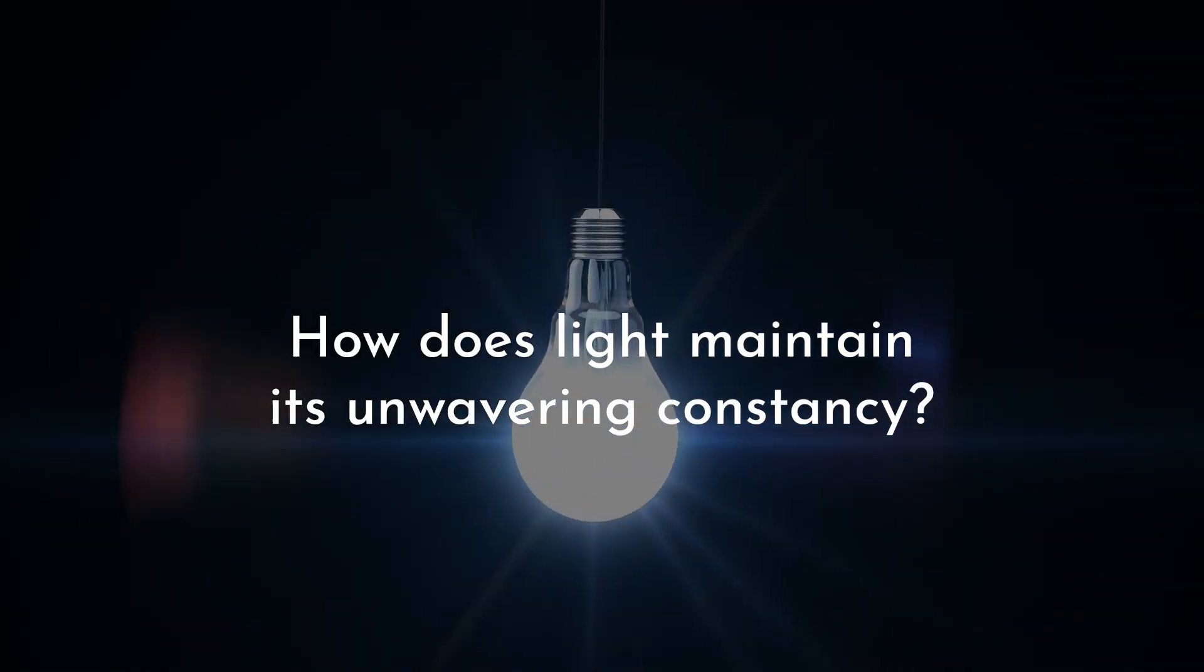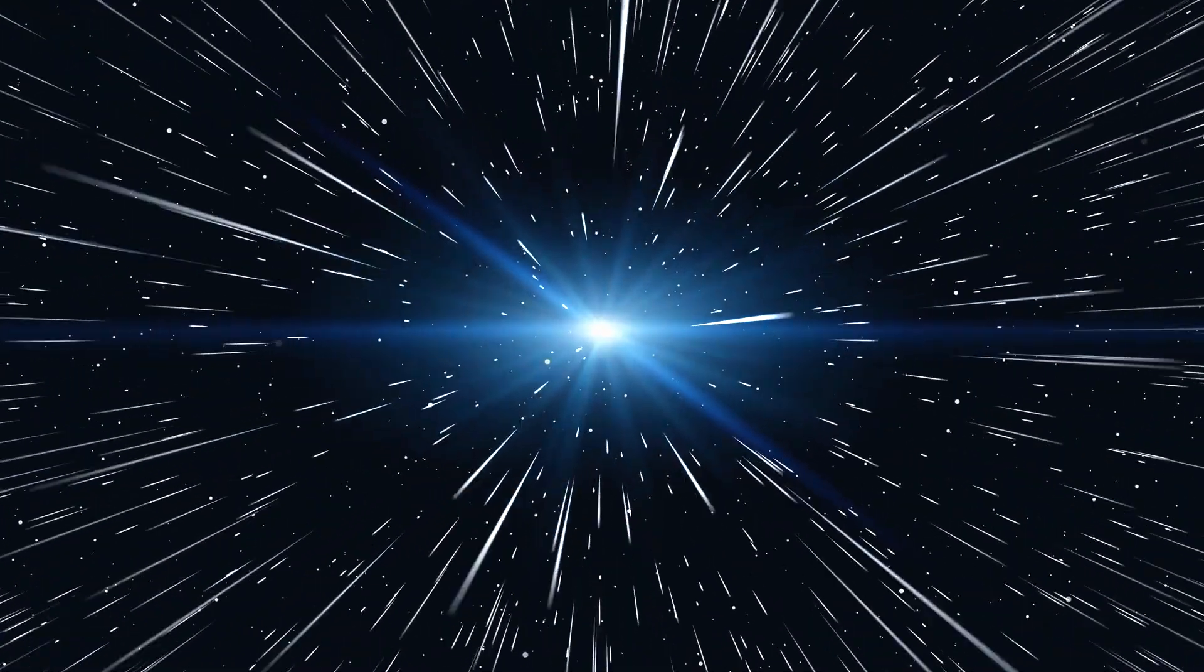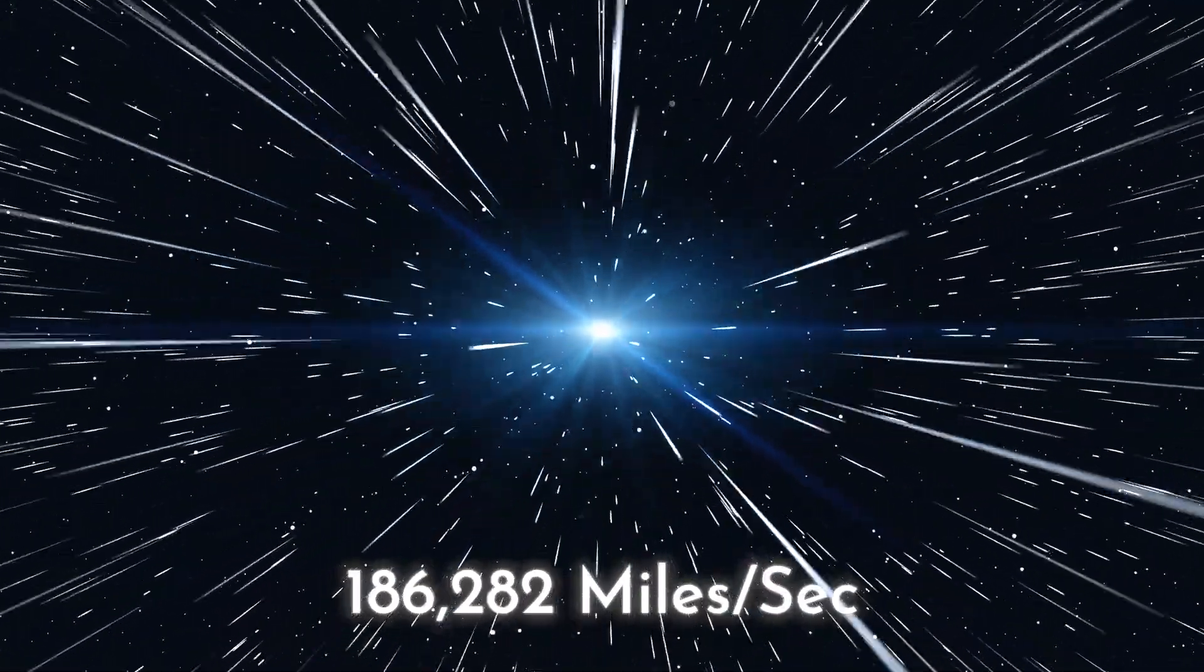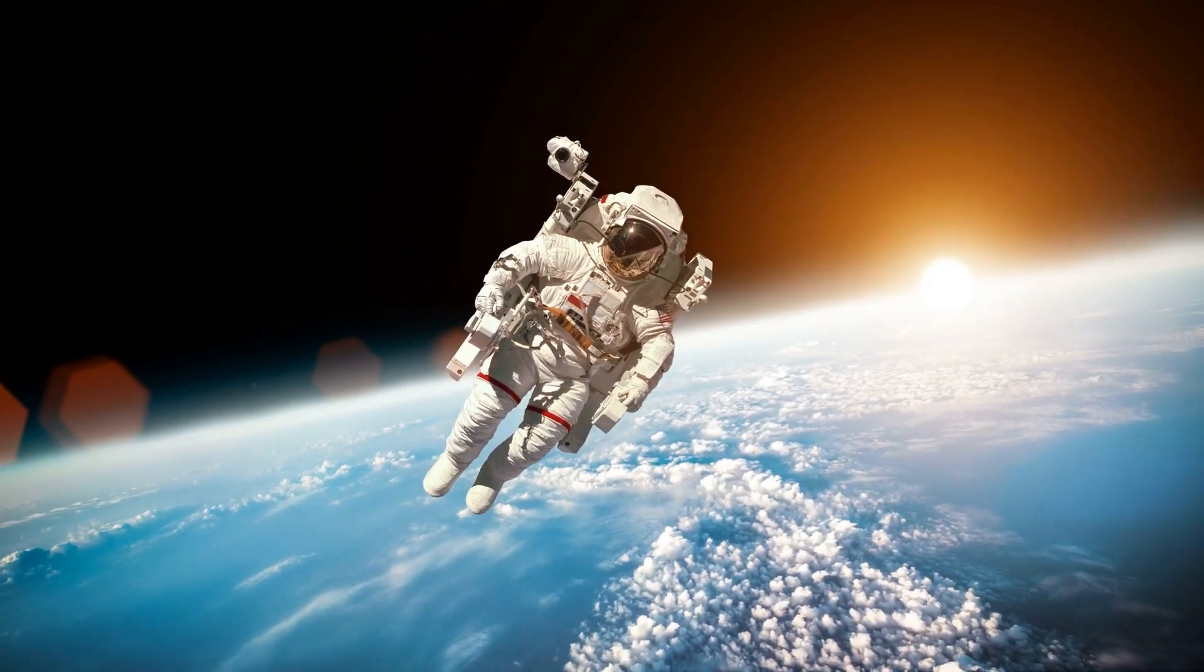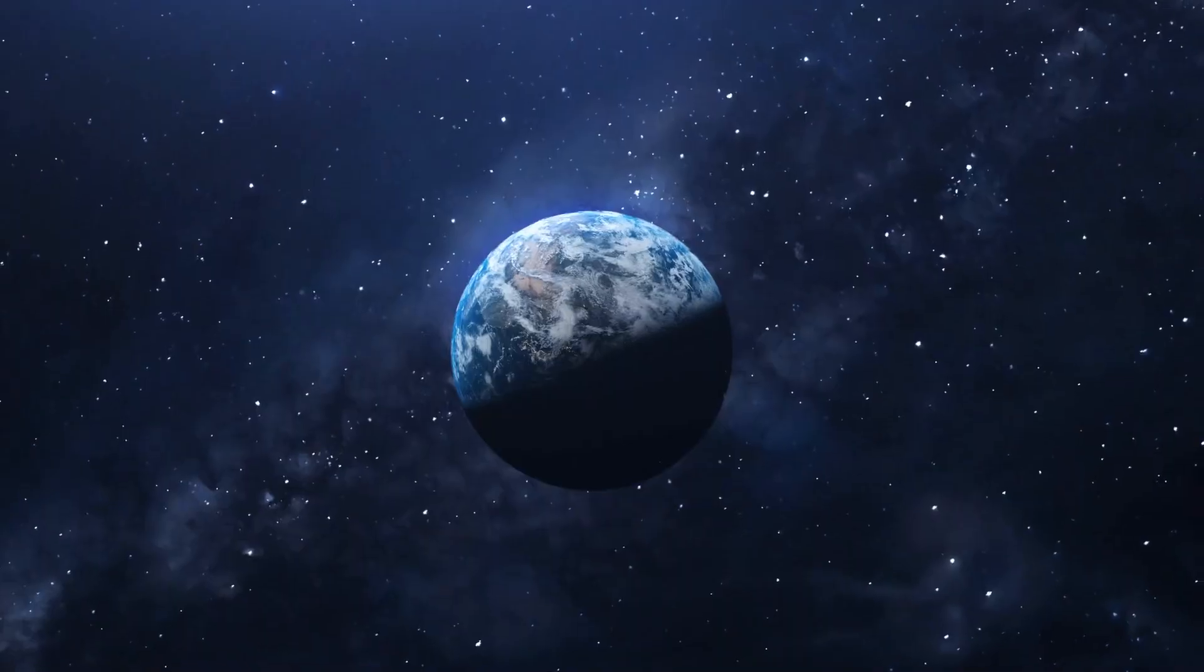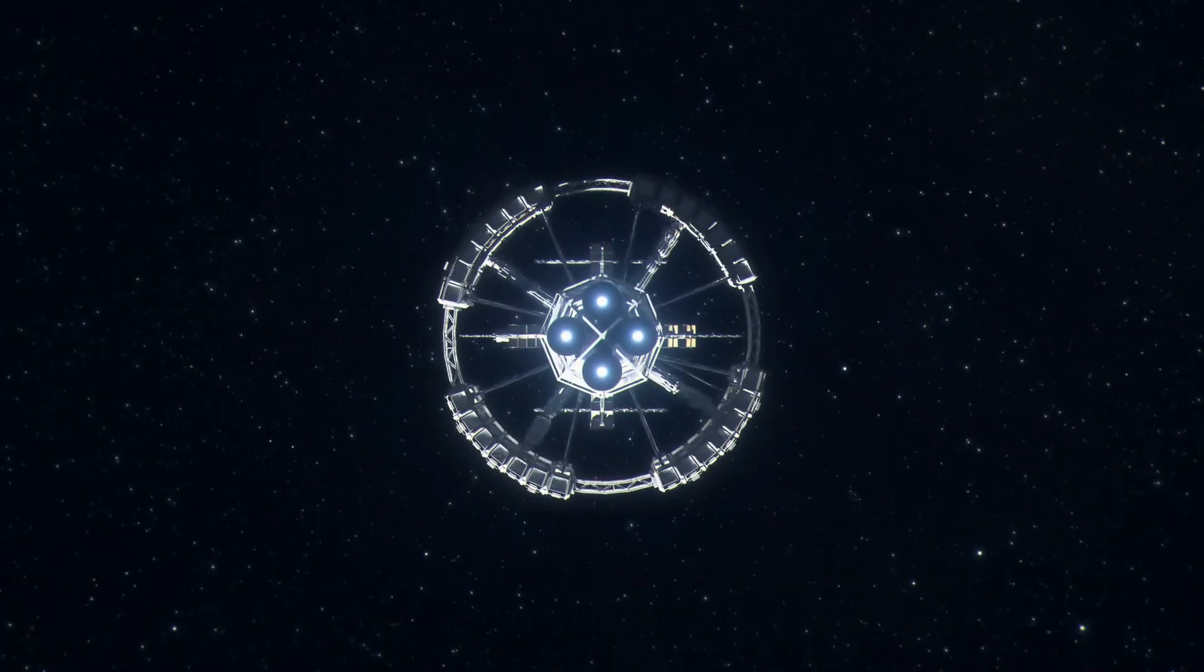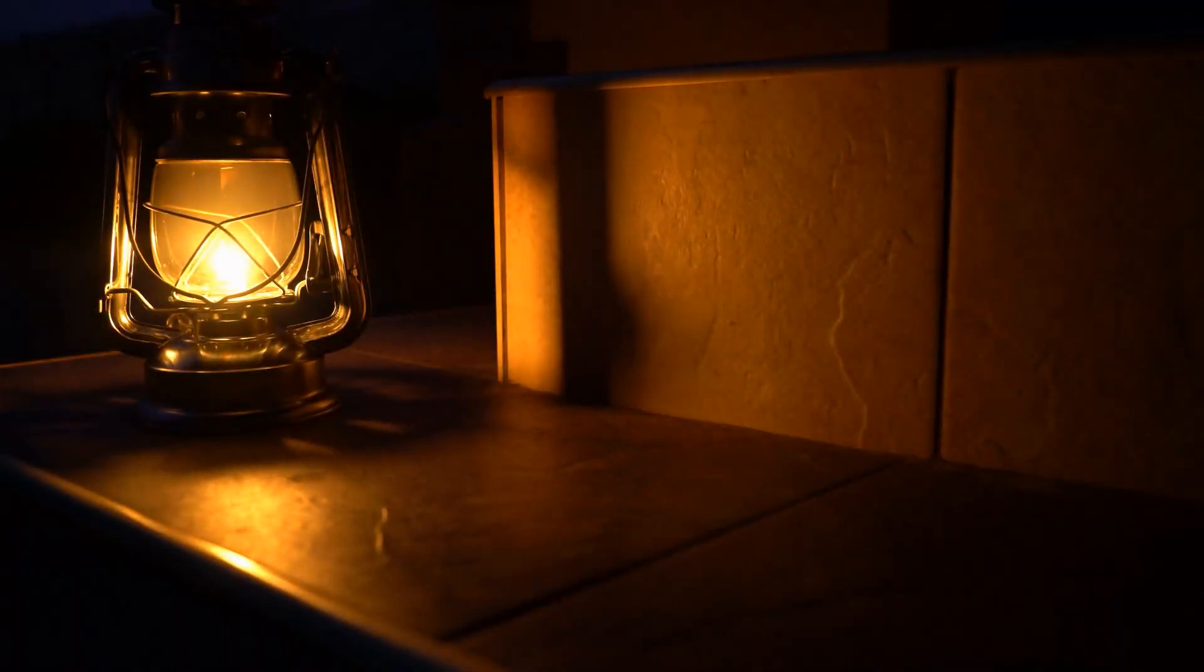How does light maintain its unwavering constancy? Light zips through space about 186,282 miles per second when in a vacuum, like in outer space. That's super fast, like going around the Earth almost 7.5 times in just one second. The crazy thing is, no matter how fast you're moving, light speed doesn't change for you.